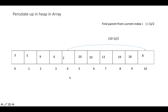Again, we need to verify its parent position — whether the parent is less than 2 or not. Its parent will be at index (4-1)/2, which is index 1, giving value 5. Is 5 less than 2? No, it is not. So we need to swap it again.